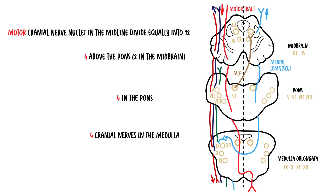Now that we have revised the rules of four of the brainstem, we can use what we have learned to look at the midbrain syndromes. We're going to look at four midbrain syndromes in particular.